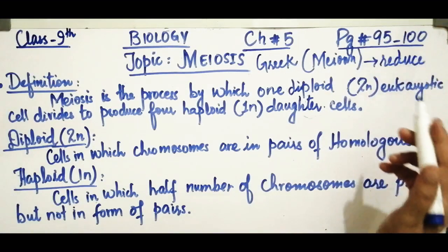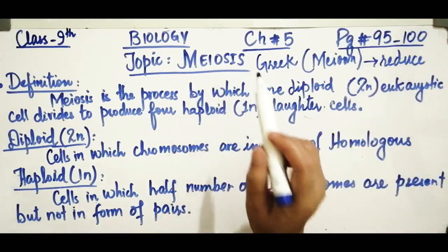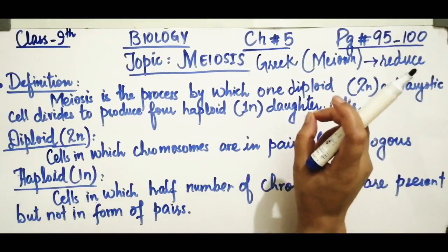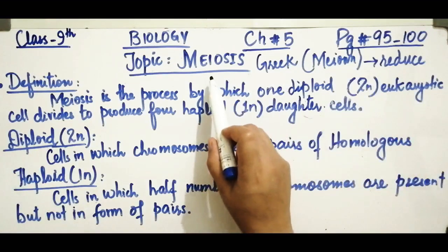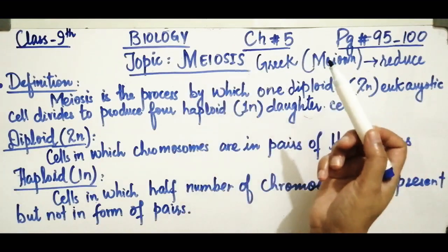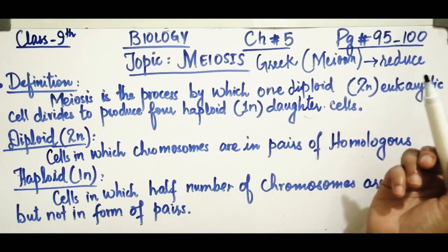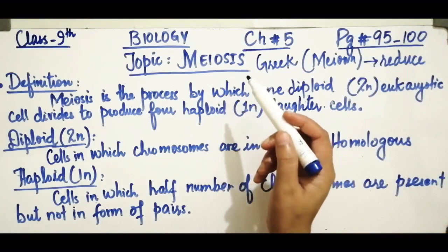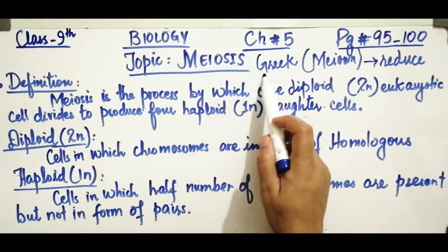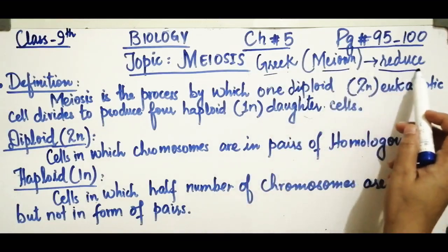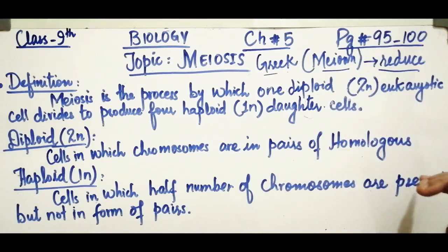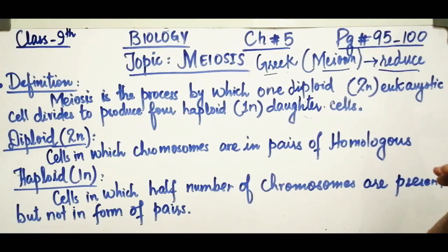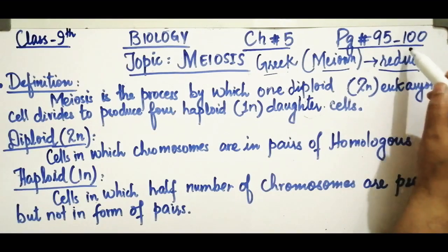This name is given to this process because in meiosis the number of chromosomes gets reduced. The number of chromosomes is reduced, which is the key feature of this process. In meiosis, the chromosomes which are in our body are reduced — specifically, reduced to half. So the term used is 'reduced'.